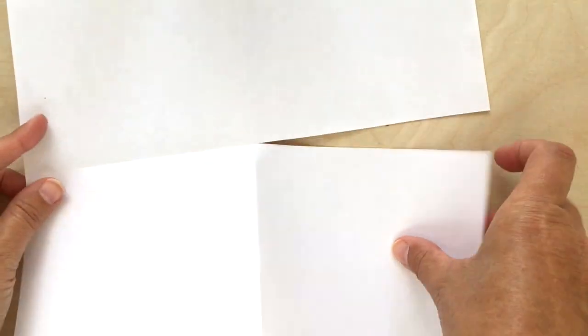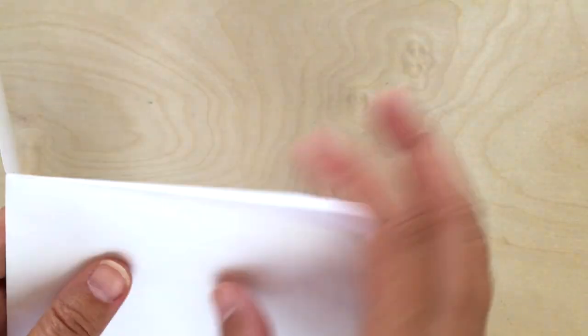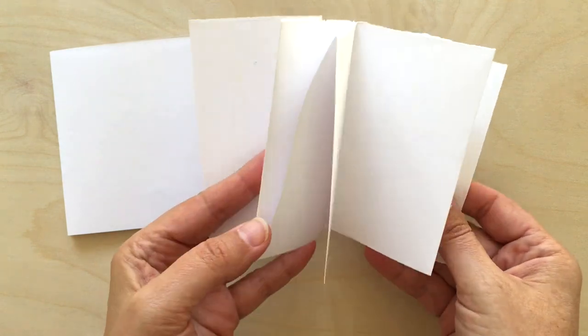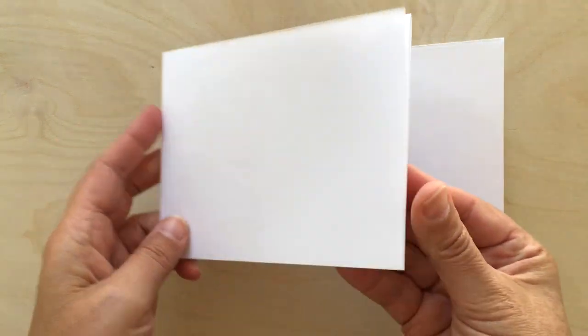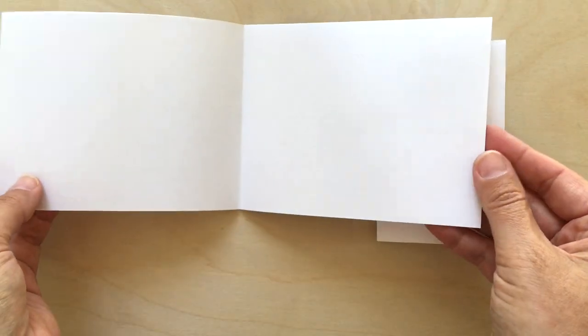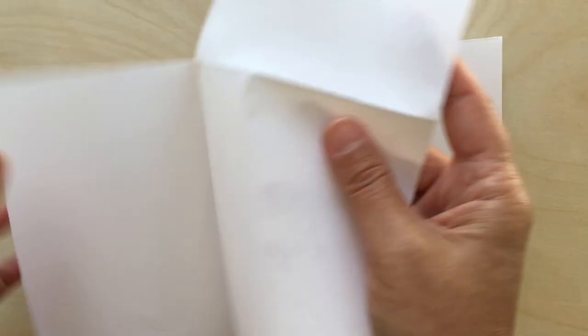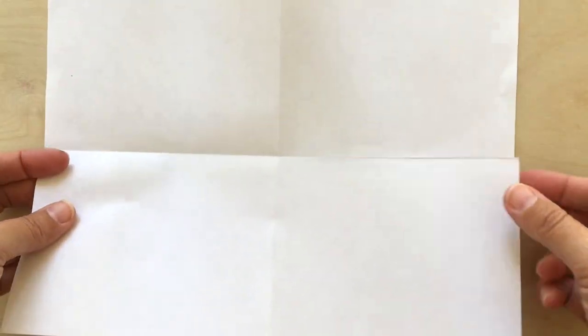So here's another book made from the same size paper that I made the first book with. And as you can see I only folded it in half and then folded it in half again. So here's the book that we made at the beginning of the video. And then here is the book with the larger pages where I just folded it in half and then in half again. So two examples from one size sheet of paper.